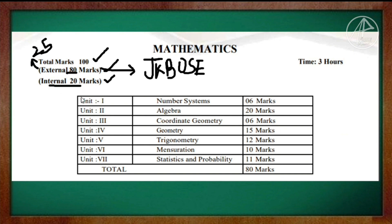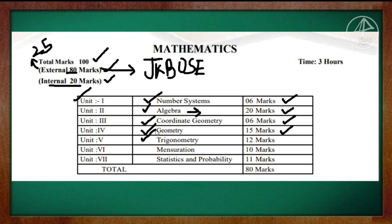In Class 10 Mathematics, there are 7 units. Unit 1 is Number System, Unit 2 is Algebra, Unit 3 is Coordinate Geometry with weightage 3 marks, Unit 4 is Geometry with weightage 3 marks, Unit 5 is Trigonometry with weightage 3 marks, Unit 6 is Mensuration with weightage 3 marks, and Unit 7 is Statistics and Probability with weightage 3 marks. The total is 80 marks.